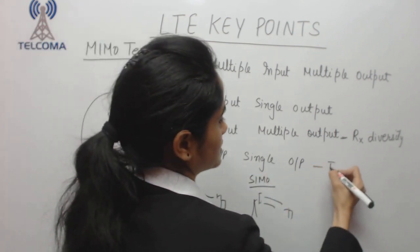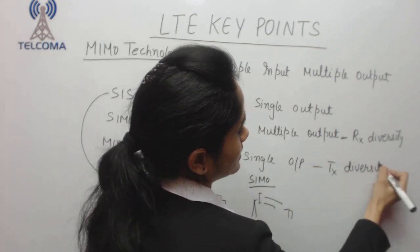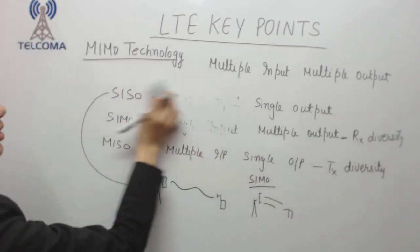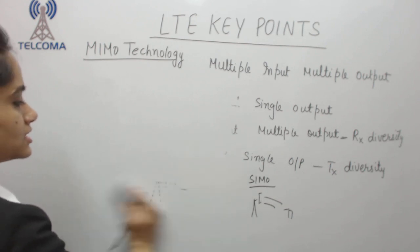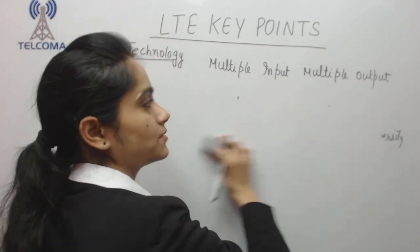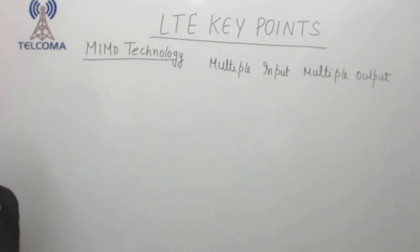Multiple input is transmission diversity. In MIMO technology or in 4G we are using multiple antennas for transmissions and multiple antennas for reception at both ends, at UE as well as at network end.